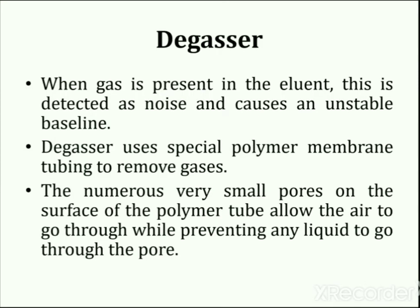The next important part of the HPLC system is the degasser unit. The eluent used for liquid chromatographic analysis may contain dissolved gases such as oxygen that are not visible to the eye. When gas is present in the eluent, it is detected as noise and causes an unstable baseline. The degasser uses special polymer membrane tubing to remove gases — the numerous very small pores on the surface of the polymer tube allow air to pass through while preventing any liquid from passing through.